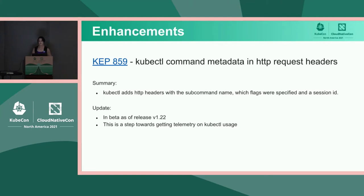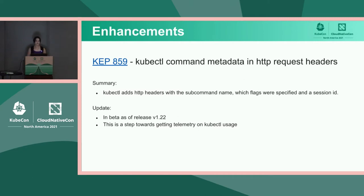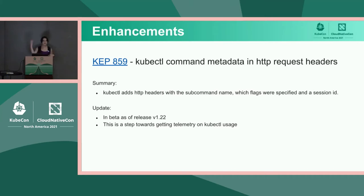Next we have kubectl command metadata and HTTP request headers. This adds metadata to HTTP headers about the command you are running with kubectl. It's in beta as of release 1.22, and it gives you more insight into what kubectl commands are being run against your cluster, connecting the dots between the user running a command and the request you see on the API server. This is a step towards getting some telemetry on kubectl usage.